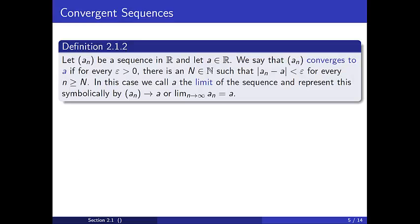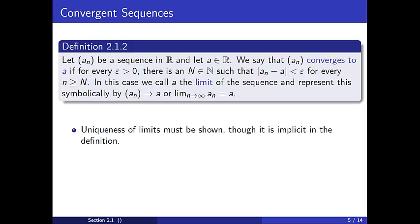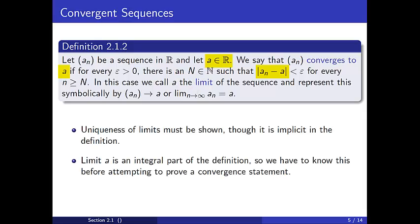As a first remark on the definition, notice that we refer to little a as the limit of the sequence, which implies uniqueness. In other words, a sequence cannot have two limits — you will show this in the exercises. Also, the limit a is an integral part of the definition of a convergent sequence. Hence, we must know this value before attempting to prove that a sequence converges. In other words, we must make a guess as to what the limit of the sequence is and then attempt to use the definition to show that the sequence does in fact converge to our proposed limit.